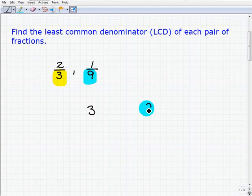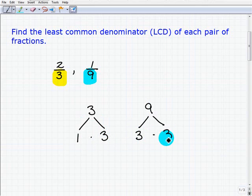And when we do that, we're actually finding the LCD. Alright, so the way you do this is prime factor. Okay, of course, three factors as one times three. And nine will factor as three times three. So these are the factors here that we have to consider.